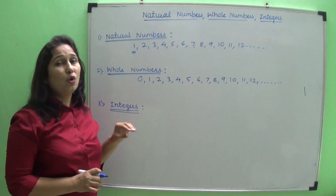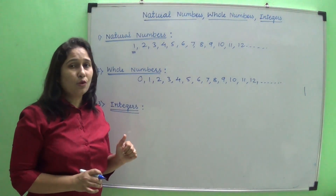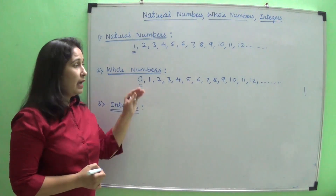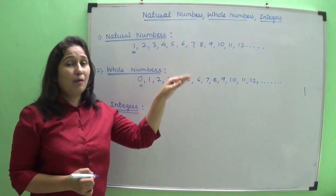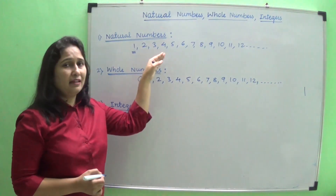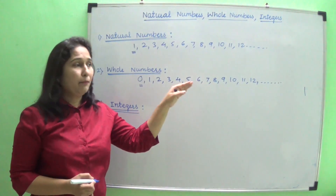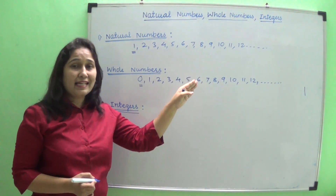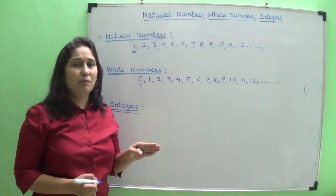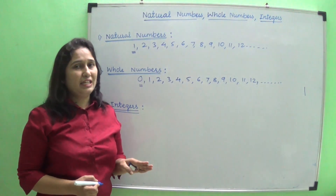The difference between these two sets is only zero — zero is the additional element. When you include zero in the natural number set, you get the whole number set. The lowest whole number is zero, and the highest whole number is impossible to find because whole numbers extend towards infinity, so the highest whole number is an undefined term.